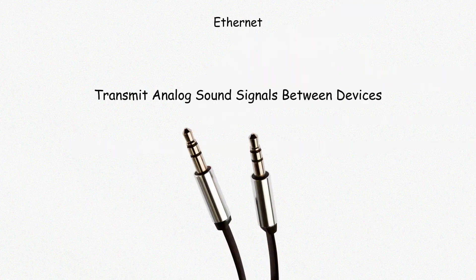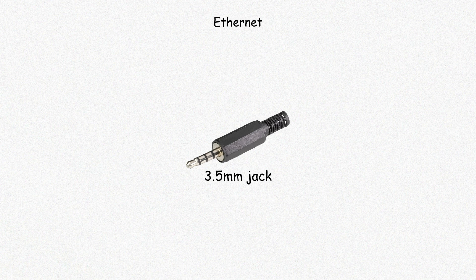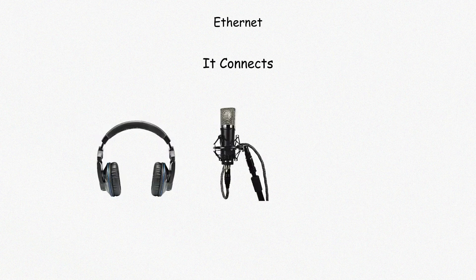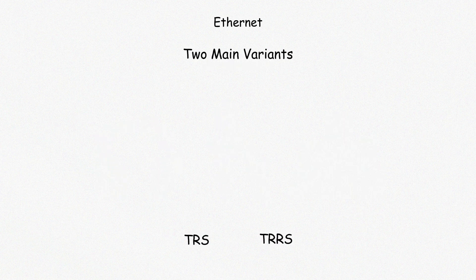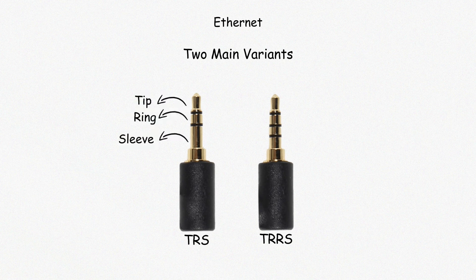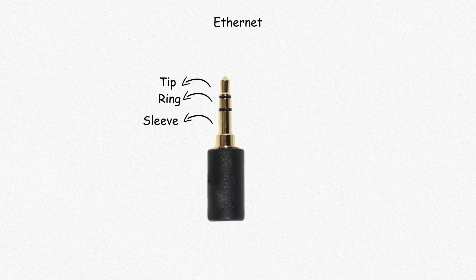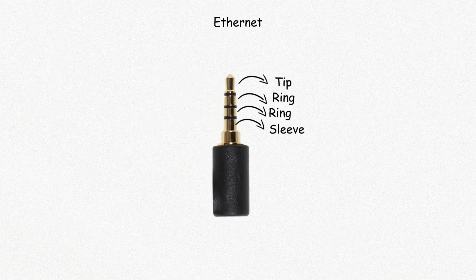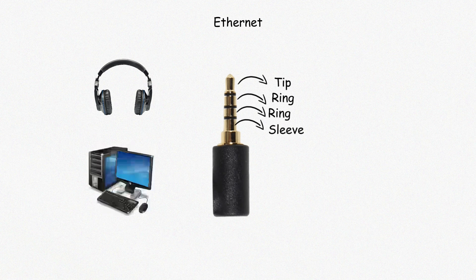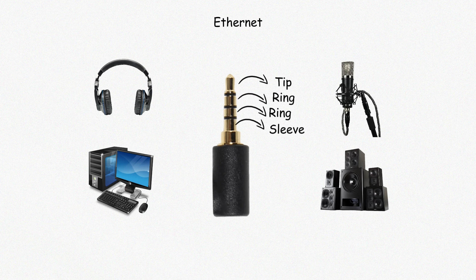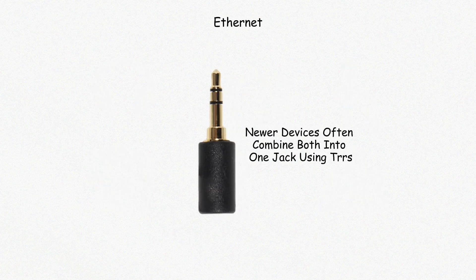Audio jacks transmit analog sound signals between devices. The most common type is the 3.5 millimeter jack, also known as a headphone jack, connecting headphones, microphones, and speakers to a computer. There are two main variants: TRS (tip ring sleeve) and TRRS (tip ring ring sleeve). TRS has three contact points and supports stereo audio. TRRS adds a fourth contact, enabling both stereo audio and microphone input in a single plug, commonly used in headsets. Older computers sometimes include separate jacks for microphone input and speaker output, typically color-coded pink and green, while newer devices often combine both into one jack using TRRS.